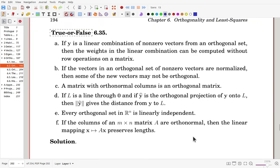Here we have true or false problems. If y is a linear combination of non-zero vectors from an orthogonal set, then the weights in the linear combination can be computed without row operations on a matrix. Is it true? Yeah, it is true. In part one of the section, we considered a theorem, and that is one of the main reasons why we try to get orthogonal bases.